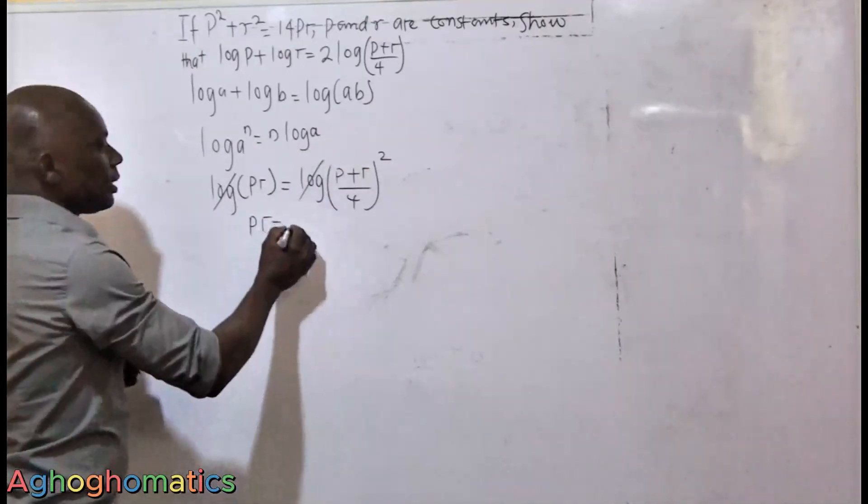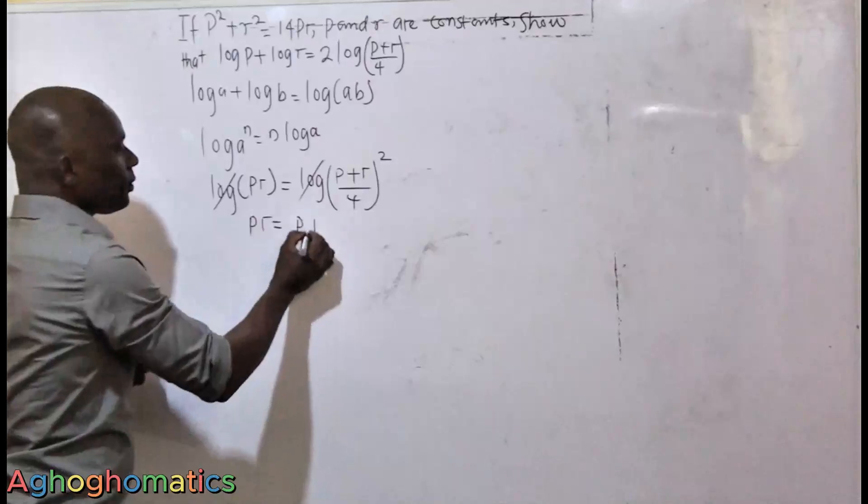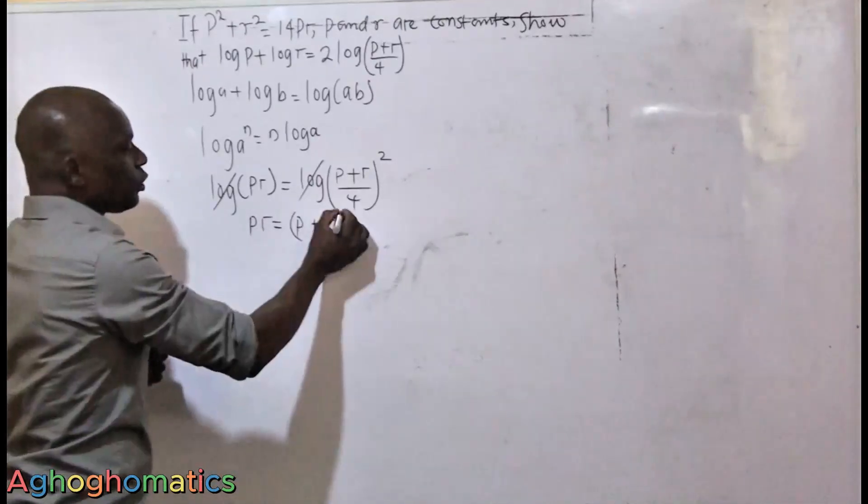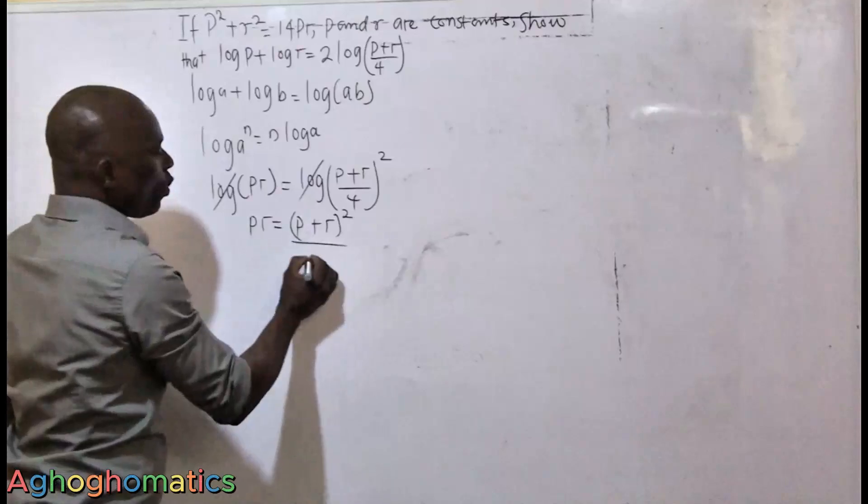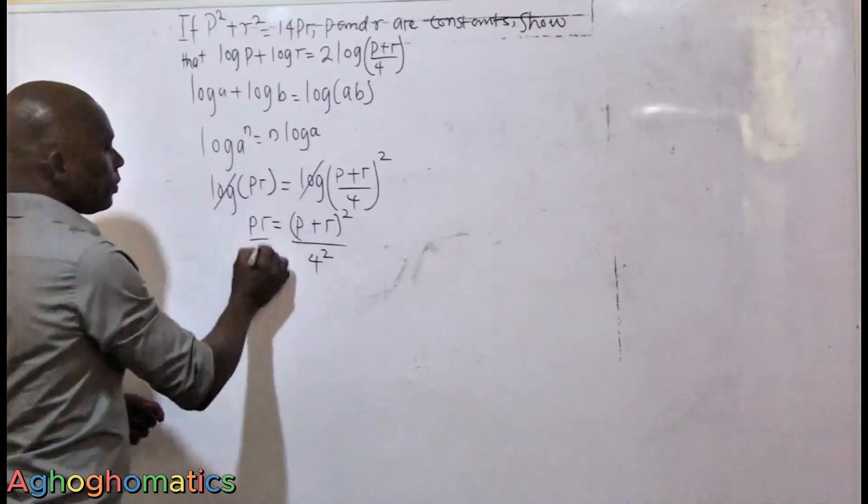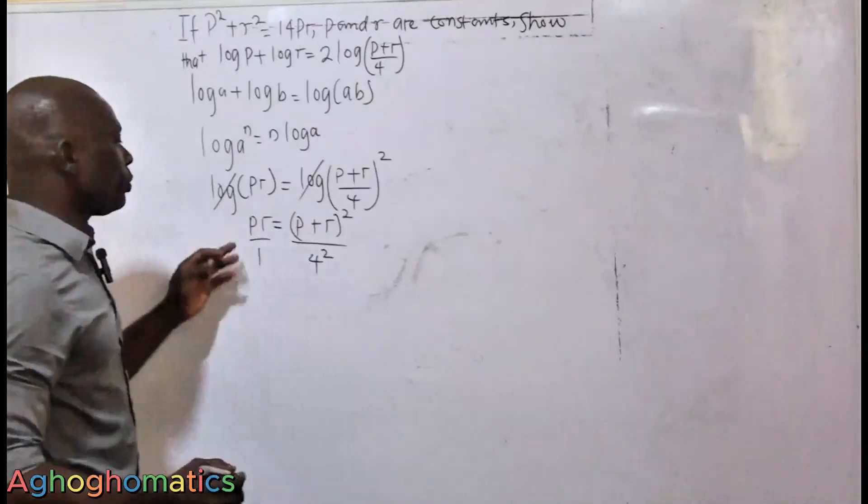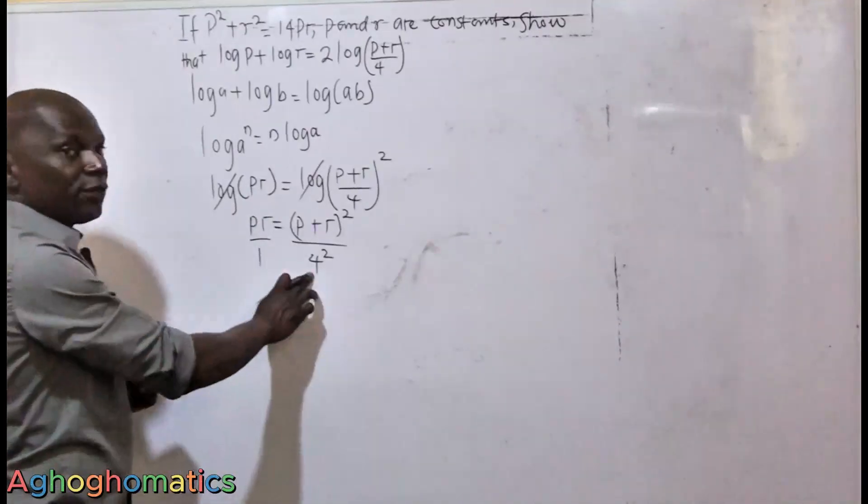So the square here captures both the numerator and the denominator, so (P plus R) squared over 4 squared. Okay, so from here, let's first of all cross-multiply.